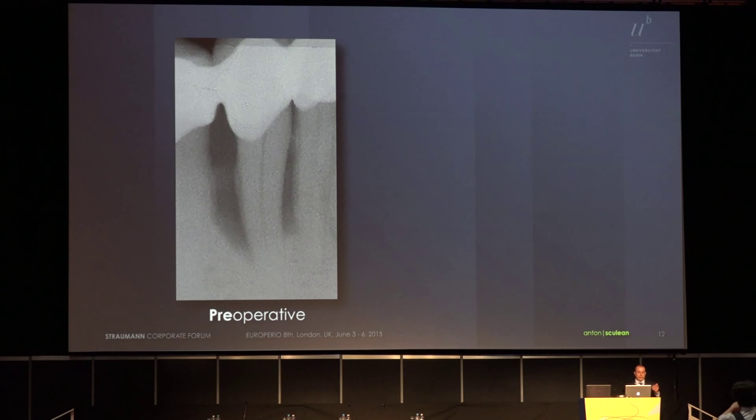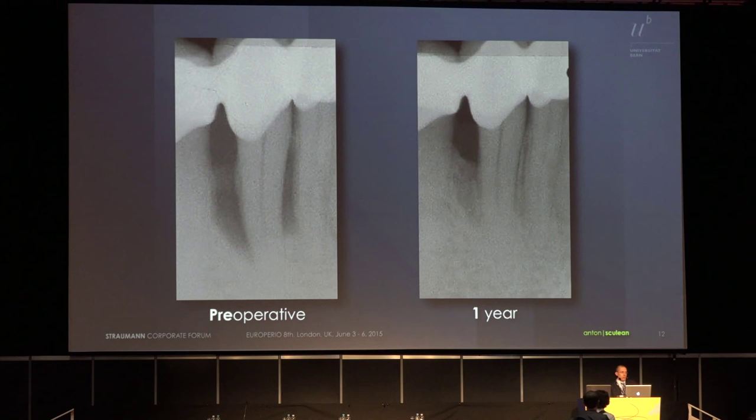For example, if you have a case like this one — a patient referred to me with a 50-millimeter deep pocket — I would like that after regenerative therapy the case should look like this one: around 8 millimeters attachment gain and around 7 millimeters bone gain.